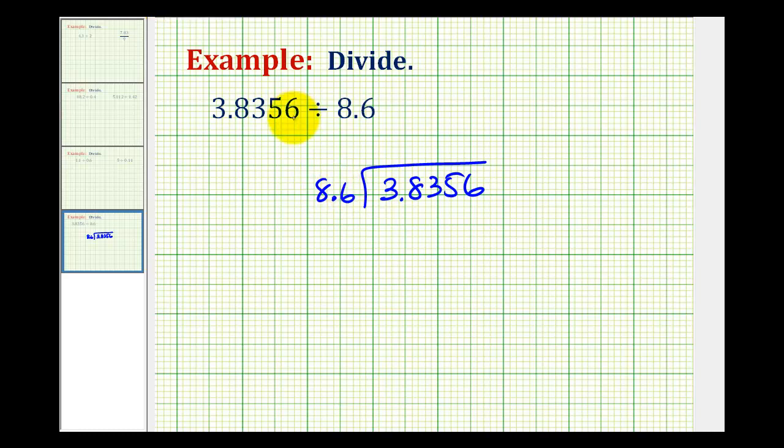The first step is we want the divisor to be a whole number. So we'll move the decimal point to the right one place to make this 86, and we can do this as long as we move the decimal point to the right once in the dividend. So move the decimal point from here to here in our dividend and then move it straight up into our quotient.